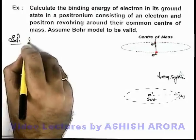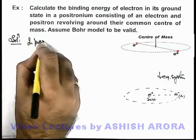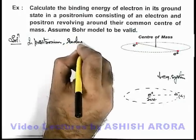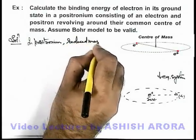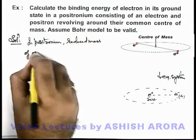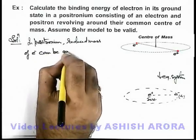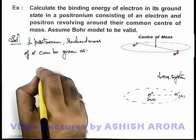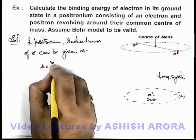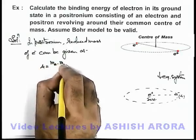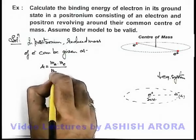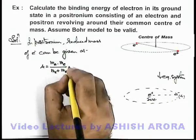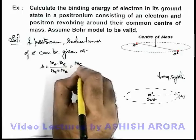In positronium, reduced mass of electron can be given as - the expression for reduced mass we already studied in previous section which can be given as μ = m_e × m_e / (m_e + m_e). Because here both of these particles have mass equal to that of electron, so it'll be m_e/2.